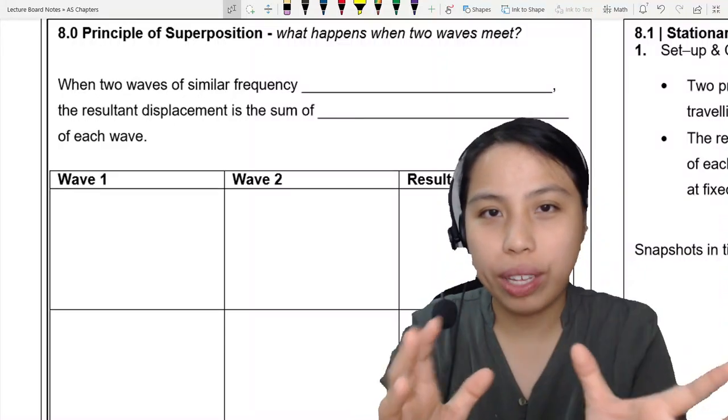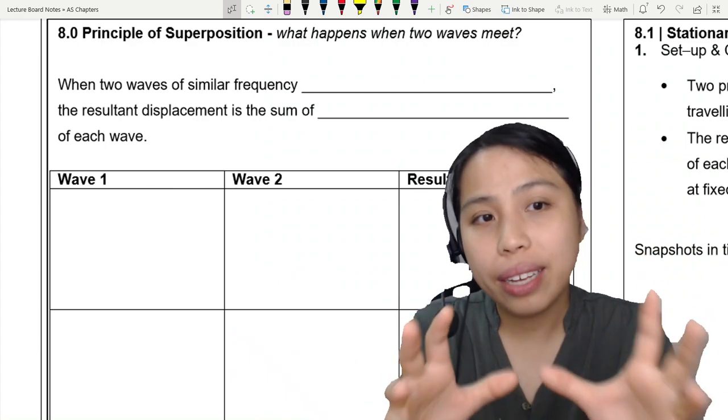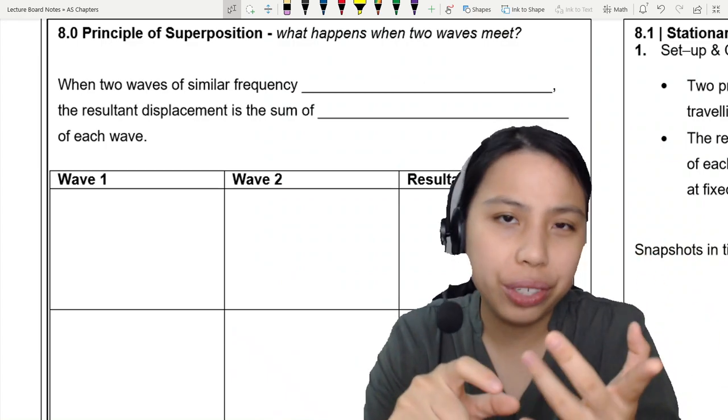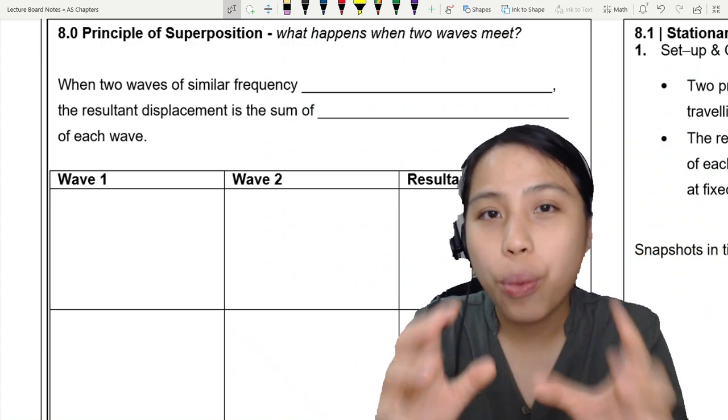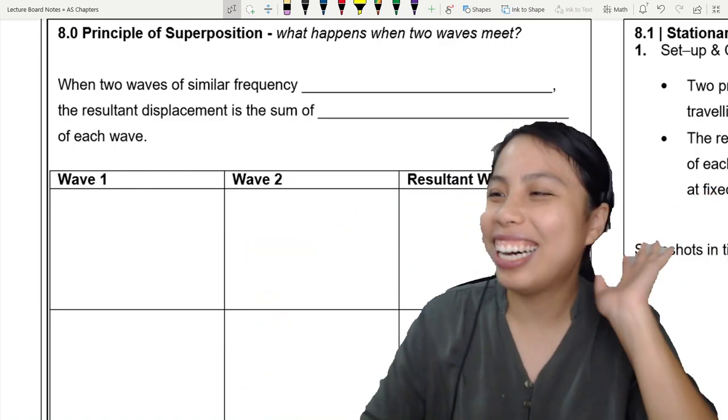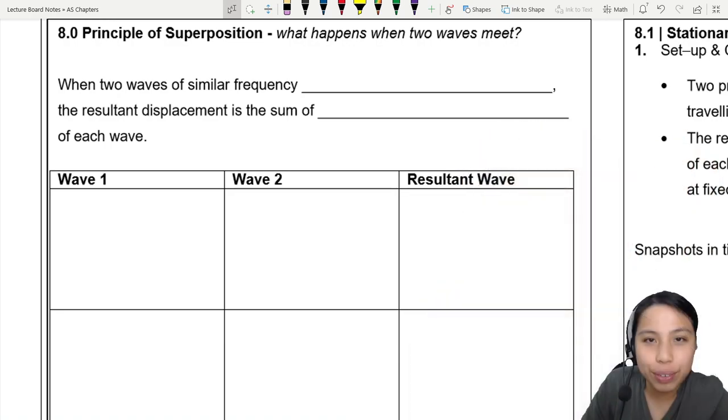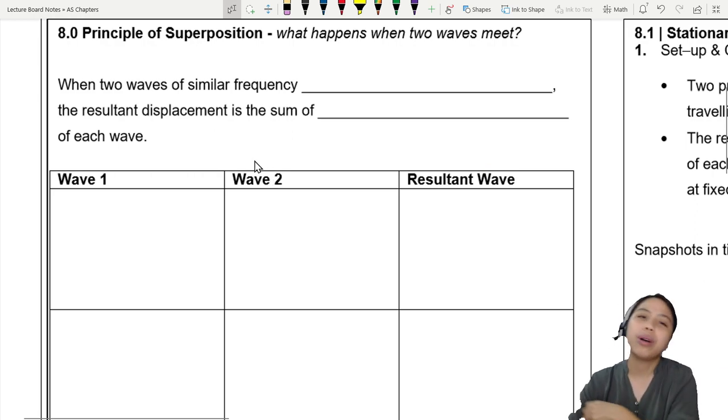In the previous video, we've looked at waves, the whole chapter about it. So here in chapter 8, we're going to look at a principle of superposition, which is asking the question, what happens when two waves meet? They wave at each other. They say hi. But we do not talk about that here in physics. Here, we are going to talk about superposition.